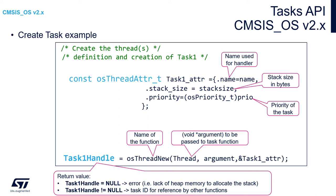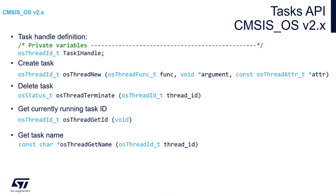As a return value of osThreadNew, we receive an ID for the new task of type osThreadId_t. If we receive null, it means there was an error during task creation — usually a memory allocation issue. Verify that you have enough memory in the OS heap. Remember that during task creation, two memory areas are allocated: the TCB (Task Control Block), which is approximately 100 bytes, and the task stack.